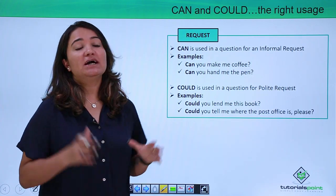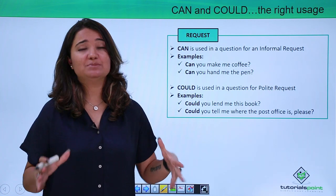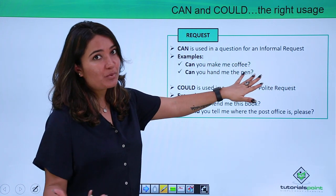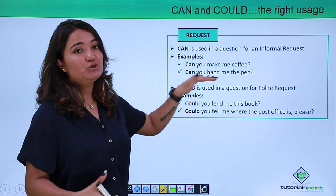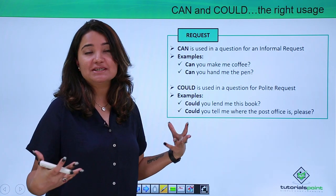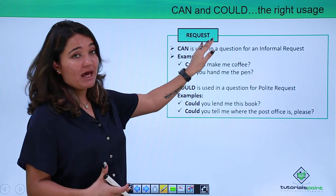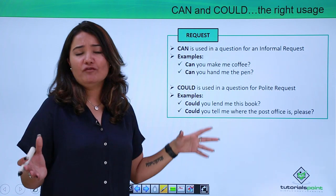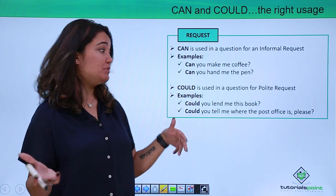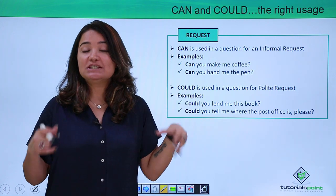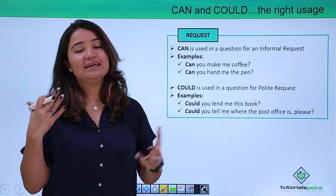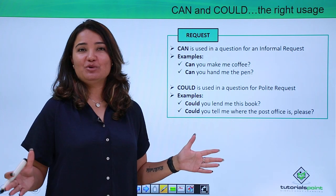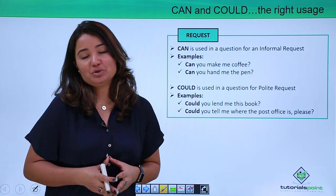Can and could are both used for requests, but what is the difference? Can is used to make an informal request, while could is used for a polite request. For example: 'Can you make me coffee?' is an informal way of requesting somebody, whereas 'Could you lend me this book?' is a more formal and polite way of requesting. So can is more informal and could is more polite when making requests.